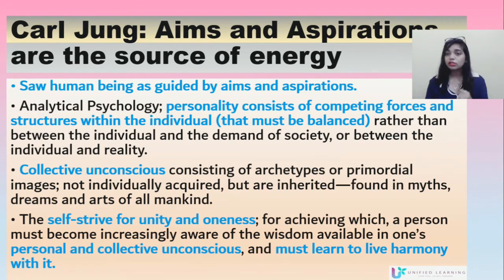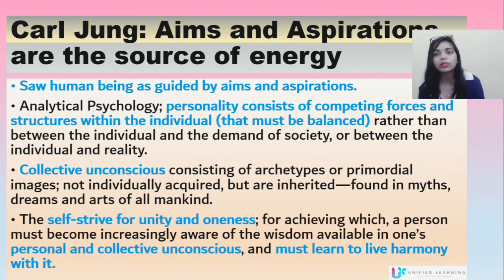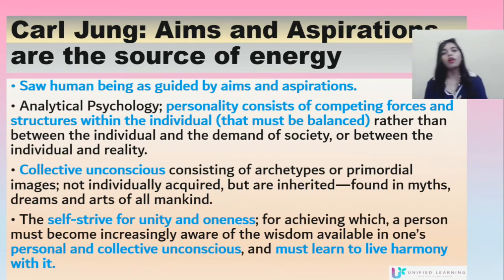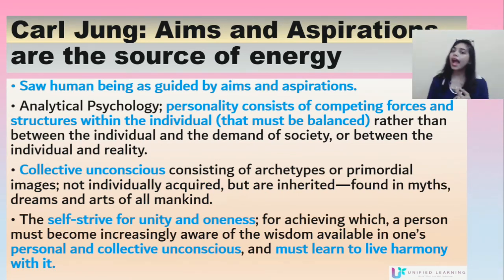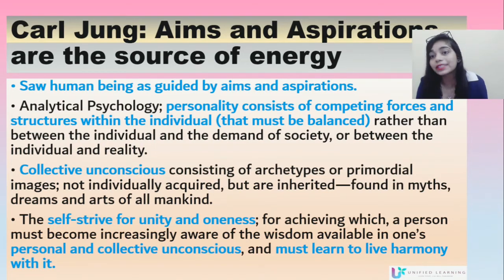Jung also emphasized that the self strives for unity and oneness, which he saw in human beings. The person and the collective unconscious must learn to live in harmony. Key aspects of Jung's theory include the importance of culture, aims and aspirations, balance between demands of society and individual reality, collective unconsciousness, striving for unity, and living a harmonious life.